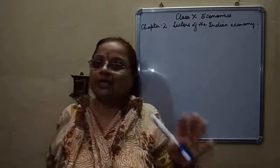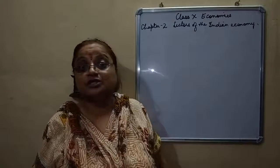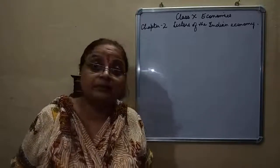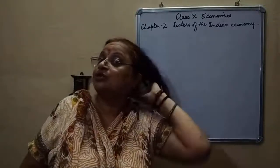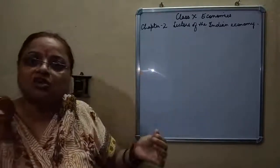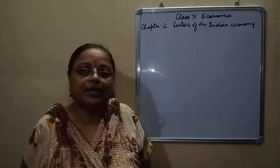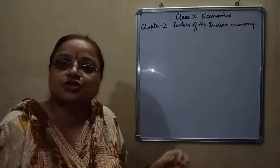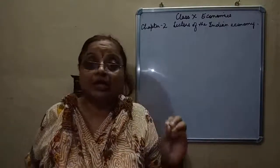Primary ke bina secondary ka kaam nahi chalega, bilkul nahi chalega. In the last class, we discussed a few examples where we understood how primary is dependent on secondary and secondary is dependent on primary. For example, sugar cane — agar farmers ne mana kar diya sugar factory ko dene se, to industry thak ho jayegi. So we find how important these sectors are. When we understand these functions, then we get to know that only the final product is counted.